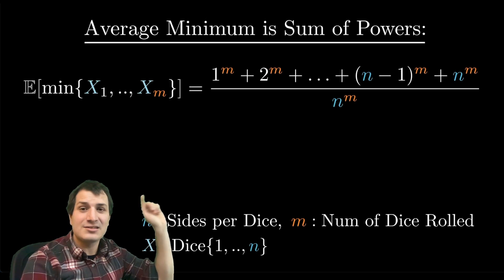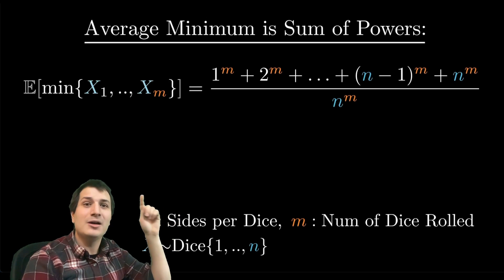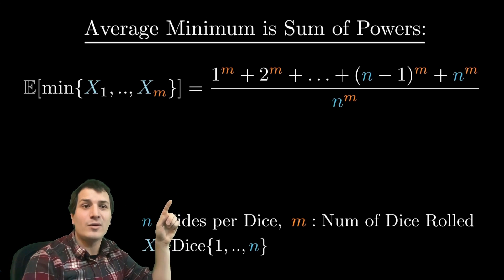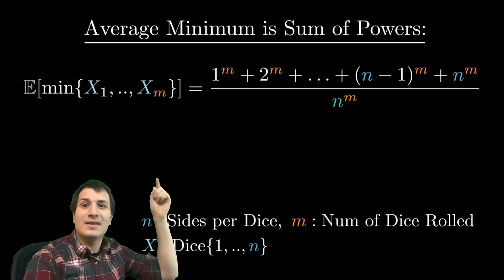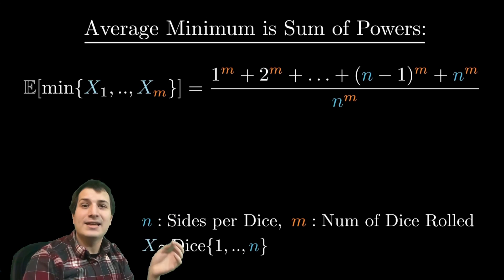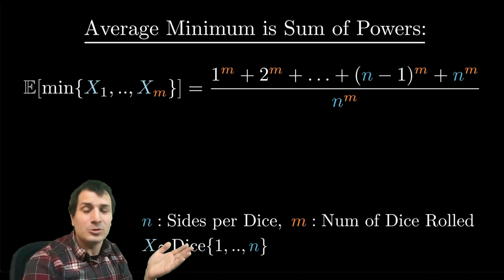It turns out this is a very nice formula: the sum of powers 1^m plus 2^m plus dot dot all the way up to n^m, all divided by n^m. So a very nice sum that gives you this average, and the way you can prove it is by using something called the Darth Vader rule.